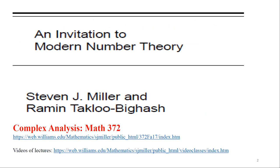I'm pulling this from a variety of sources. Some is from my book, An Invitation to Modern Number Theory, with my colleague Ramin. Another source is from Complex Analysis, which was Math 372 — now going to be Math 380-something as part of the Williams renaming convention. The book we used was Stein and Shakarchi, part of the Princeton Analysis Lecture Series — an absolutely phenomenal set of four volumes.